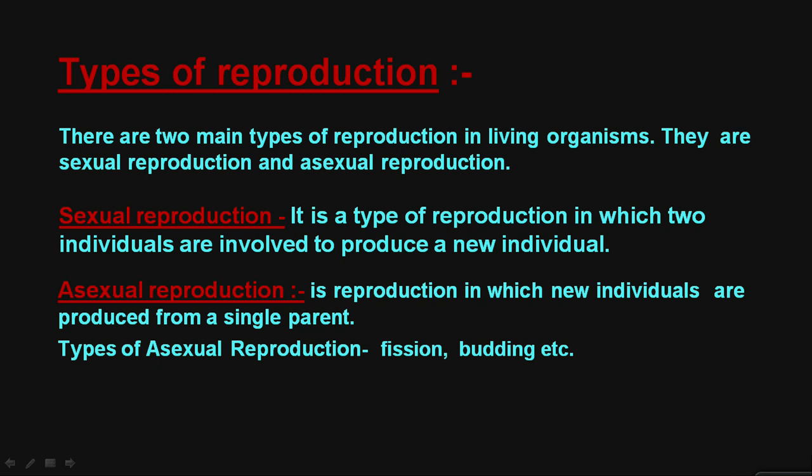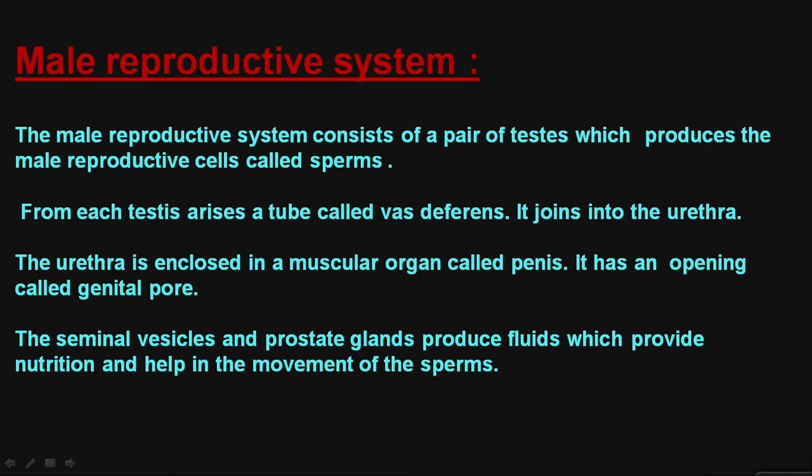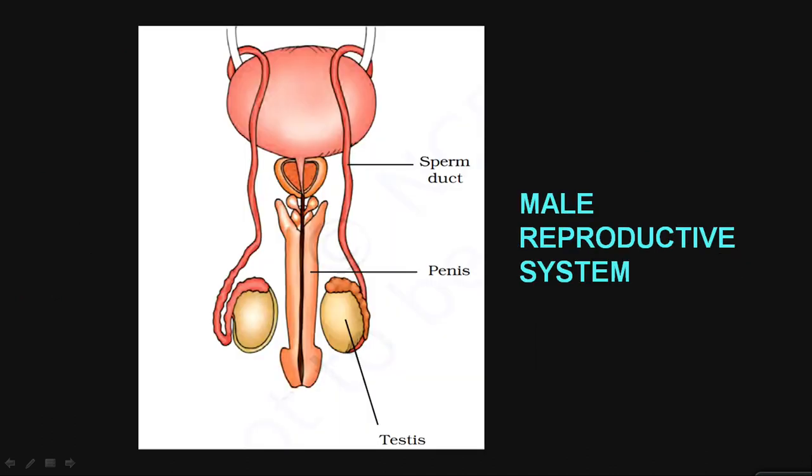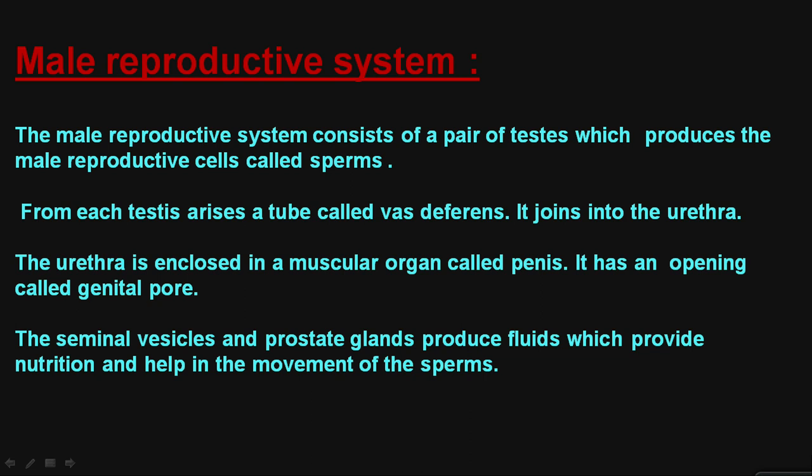The male gametes are sperm and female gametes are ovum. When these two structures come together, they create a structure called a zygote. Asexual reproduction is a type of reproduction in which a single individual can produce organisms like itself without any other individual. Most higher organisms have sexual reproduction, but smaller organisms have asexual reproduction.